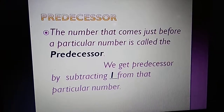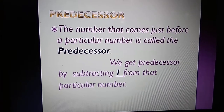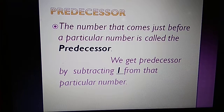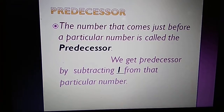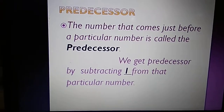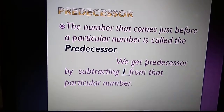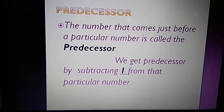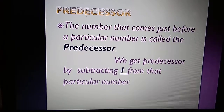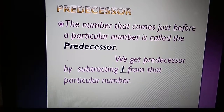The predecessor is the number that comes just before a particular number. We get the predecessor by subtracting 1 from that particular number. The predecessor is just the opposite of the successor — in successor we add 1, and in predecessor we subtract 1.